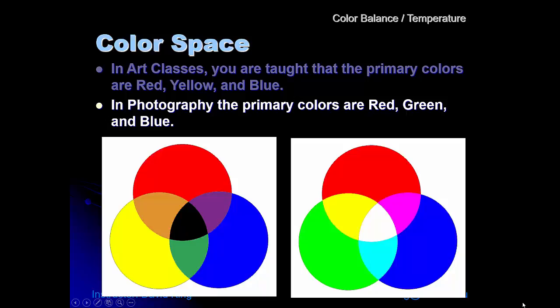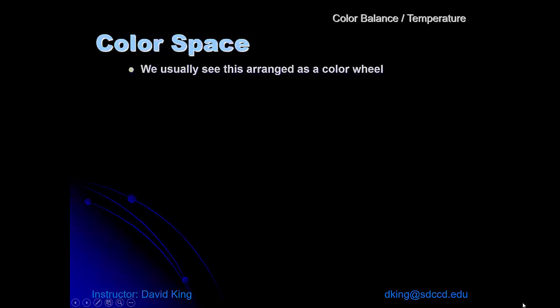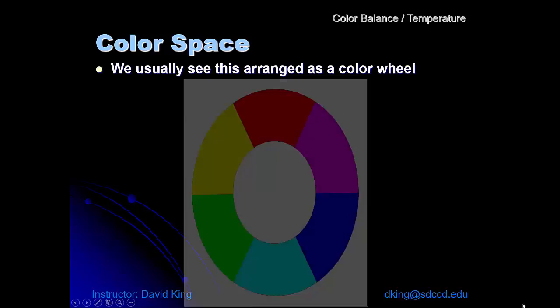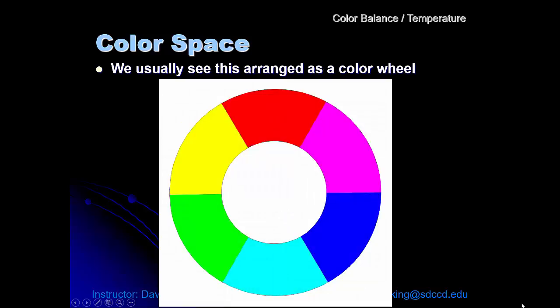So within that RGB system, how do we find different color spaces? Well, we usually see this arranged as a color wheel. In most textbooks you will see this.